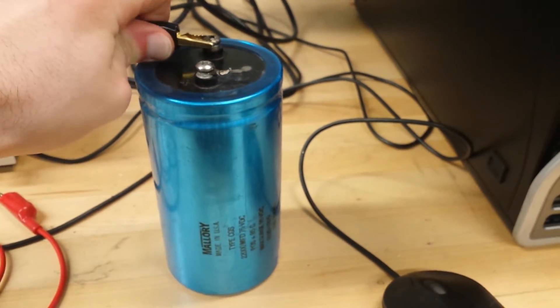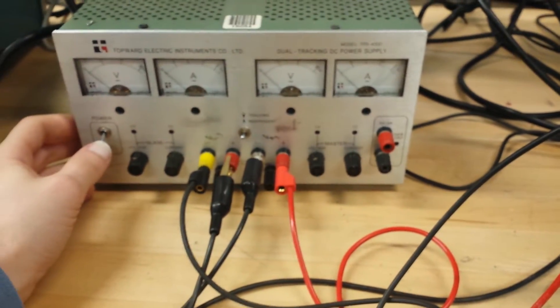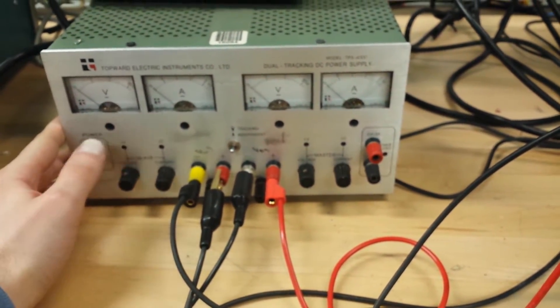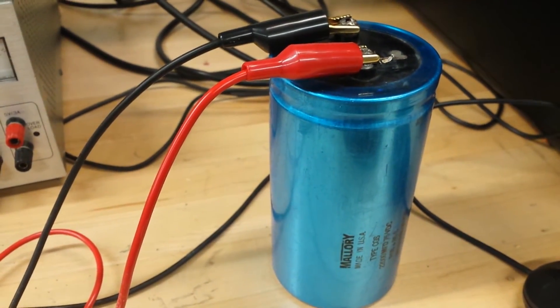So I'm going to connect my negative. I'm going to connect my positive. As you can see, I've left my power supply off. I have it set up so as soon as I turn it on it'll start charging at 64 volts, even though the capacitor goes up to 75.